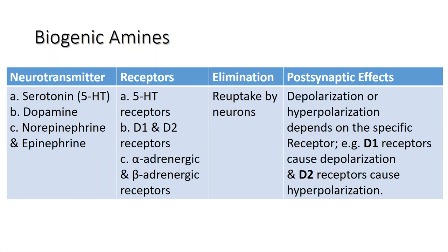Epinephrine is also known as adrenaline, and norepinephrine is sometimes referred to as noradrenaline. The adrenal gland produces epinephrine and norepinephrine to be released into the bloodstream as hormones. Norepinephrine and epinephrine are also transported back into the presynaptic cell. Additionally, some motor neurons of the autonomic nervous system release norepinephrine.